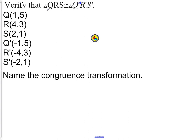What we are saying here is we have moved the triangle QRS to a new location which will be called Q prime, R prime, S prime. We want to try and name the triangle congruence transformation based on this information.